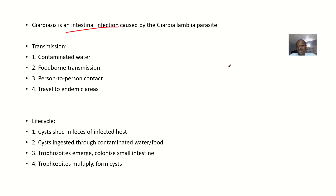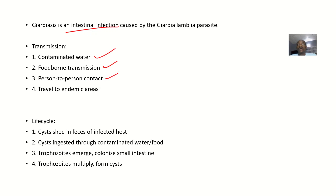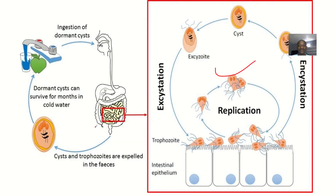Transmission: you could take in water that has this organism — waterborne transmission — or foodborne transmission, meaning you consumed food contaminated by this organism. Transmission also occurs through person-to-person contact, or if you travel to endemic areas and have body-to-body contact with water, soil, or affected people.